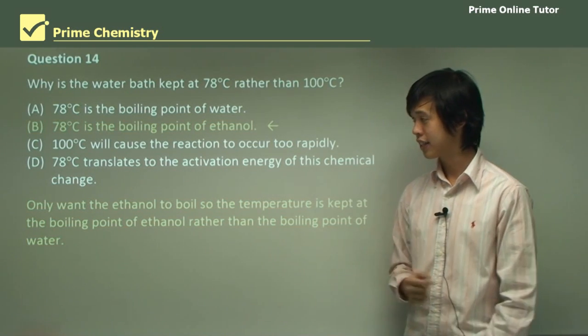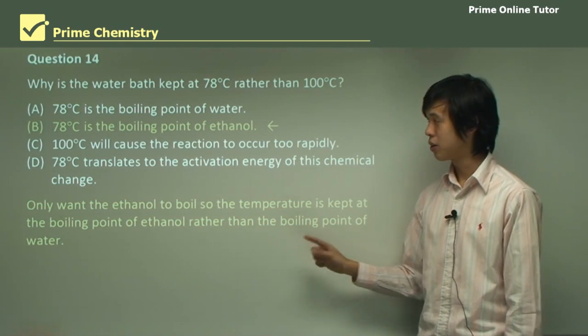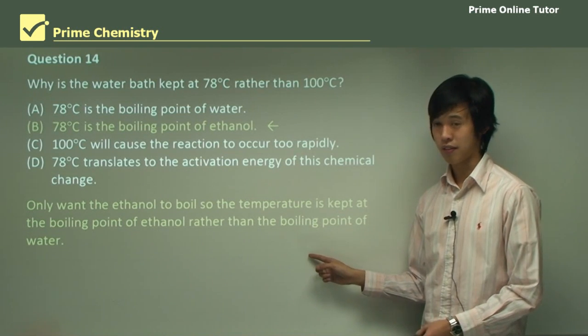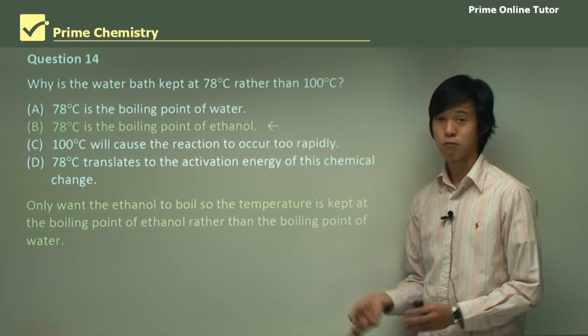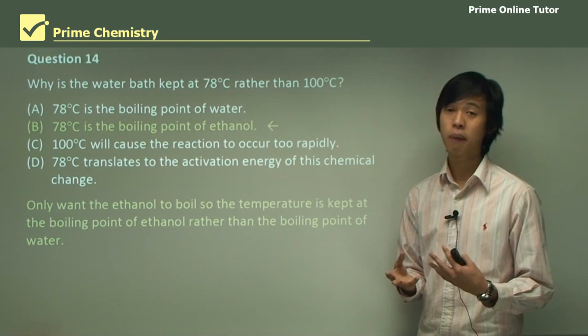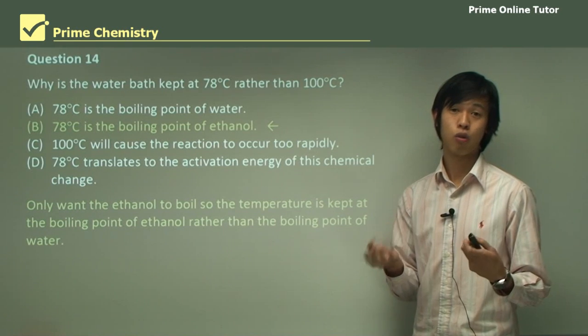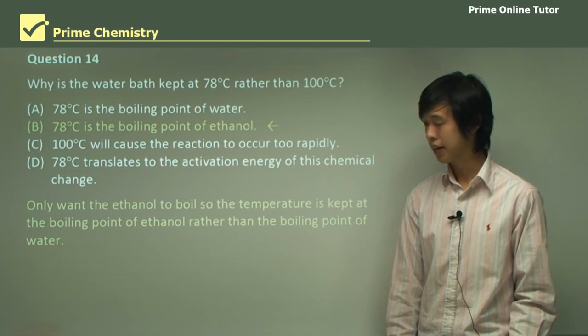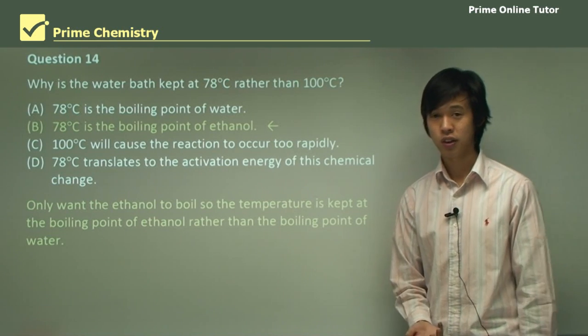This one, B, is correct in that we only want the ethanol to boil. So the temperature is kept at the boiling point of ethanol rather than the boiling point of water. So it's lower than the boiling point of water. So the water shouldn't boil. And so the ethanol will boil out. And hopefully we can collect it.